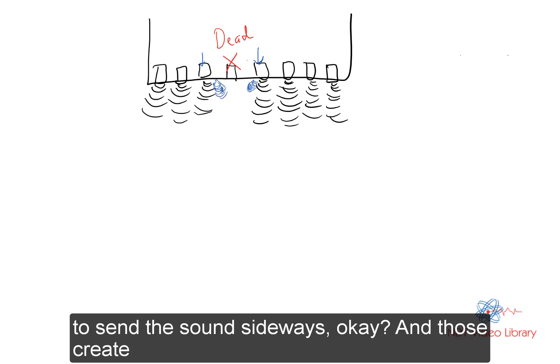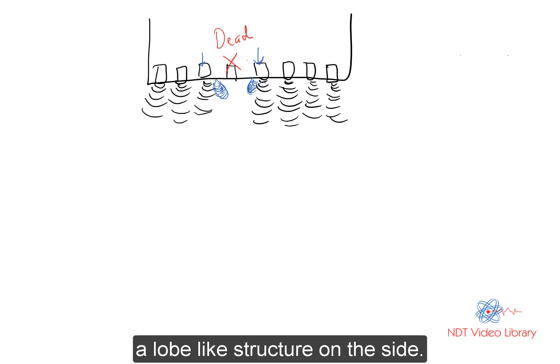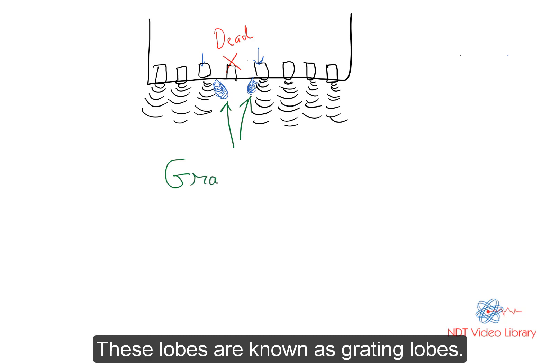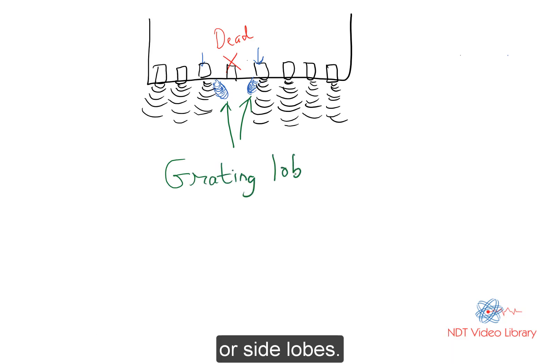Okay, and those create lobe-like structures on the side. These lobes are known as grating lobes or side lobes.